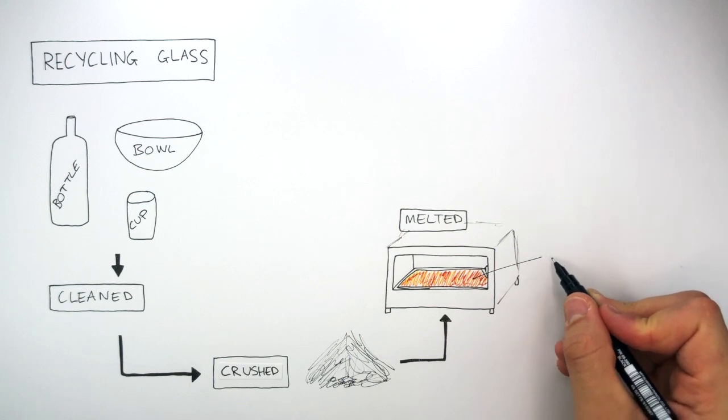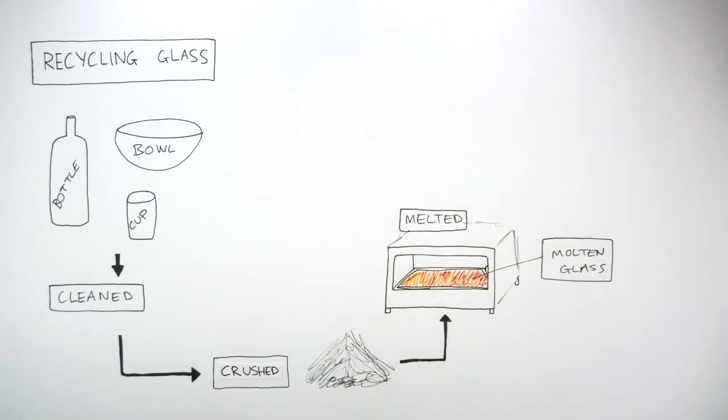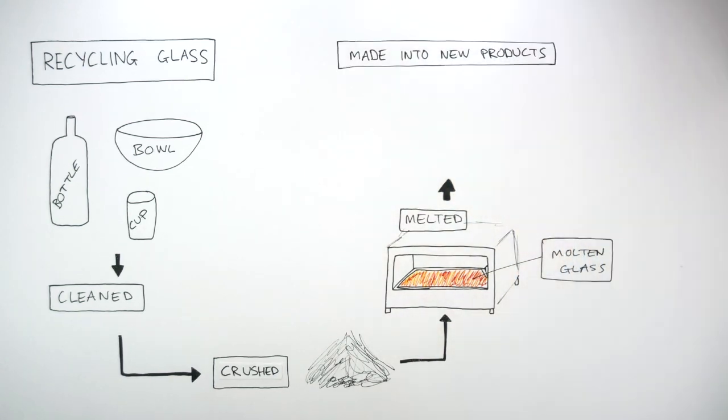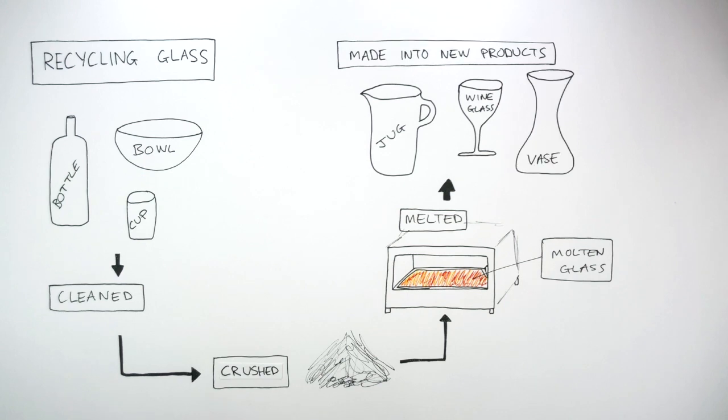The glass becomes molten glass where afterwards, the molten glass is then made into new products such as a jug, a wine glass and a vase.